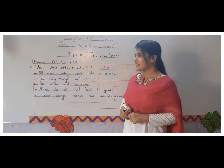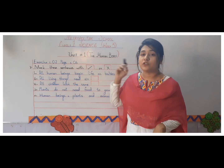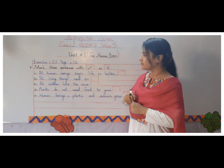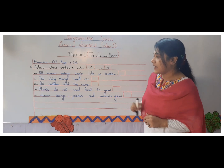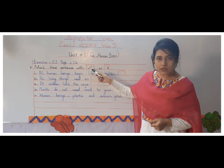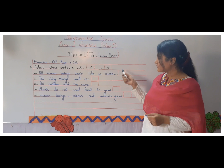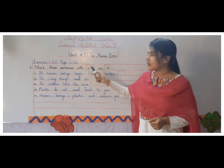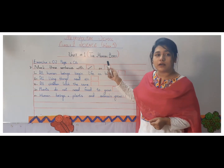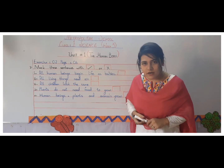After doing exercise number 1, we have to do exercise number 2 of page number 6. You all have to do this exercise in your book. In this exercise, we have to mark these sentences with a tick or a cross. If it is a correct statement, mark it with a tick; if it is wrong and not true, we will cross it. So let's begin.